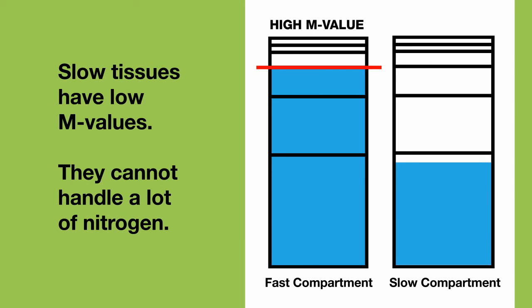And of course, by the same reasoning, slow tissues have low M values, because they cannot handle a lot of nitrogen.